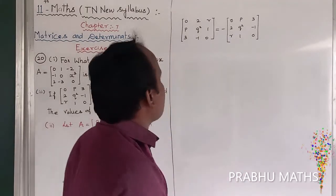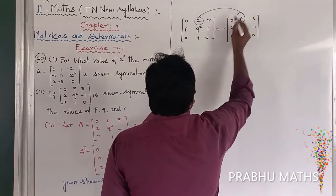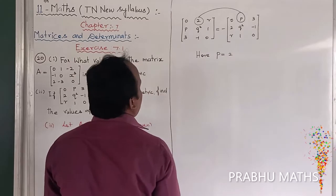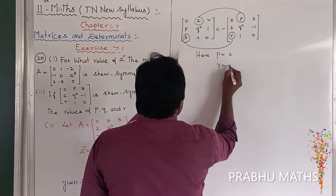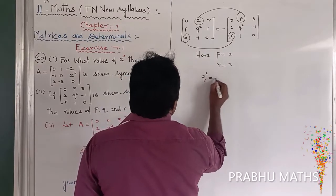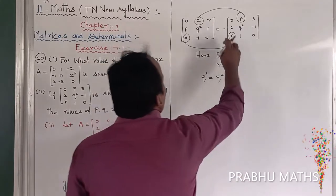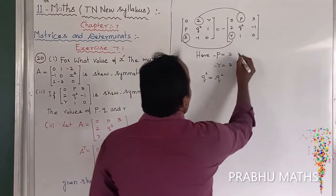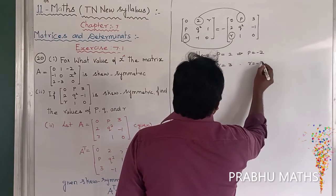Equating corresponding entries: from position (1,2), 2 equals minus p, so P equals minus 2. From position (1,3), r equals minus 3, so R equals minus 3. From position (2,1), p equals minus 2, confirming P equals minus 2. Similarly, R equals minus 3 is confirmed.